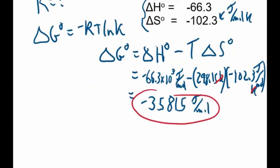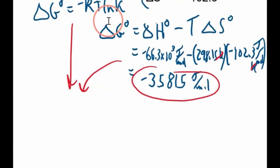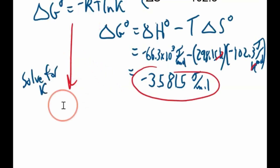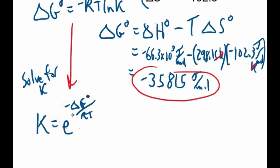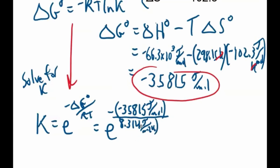Now that we have ΔG°, we plug it into K = e^(−ΔG°/RT). Make sure to put the negative value in parentheses so we don't lose the negative sign. R = 8.314 J/(mol·K) — choose the R with joules. Temperature = 298.15 K. So we compute: e^(−(−35815) / (8.314 × 298.15)).